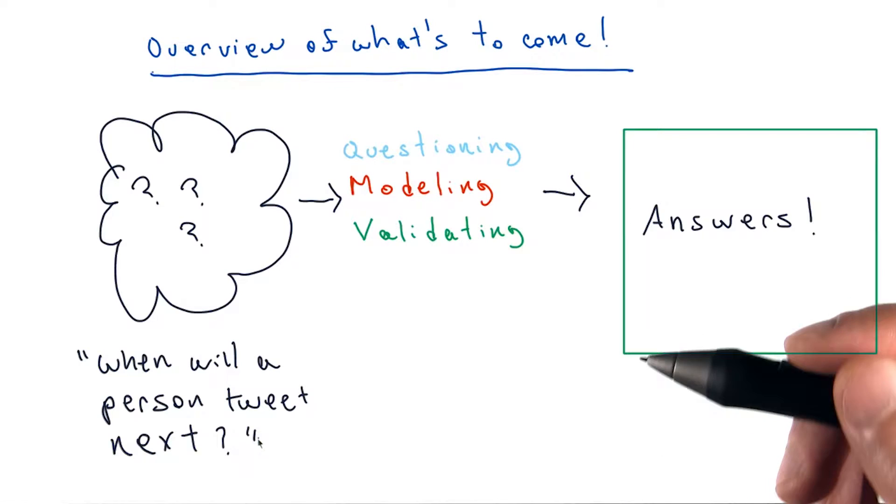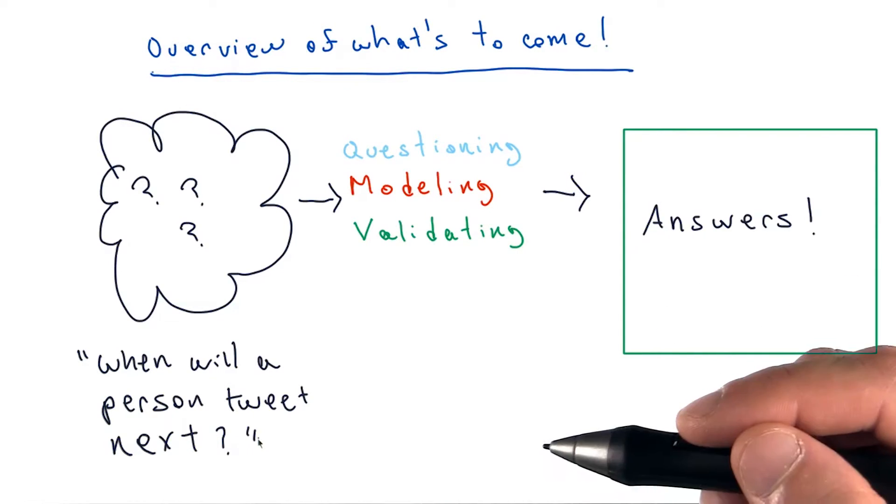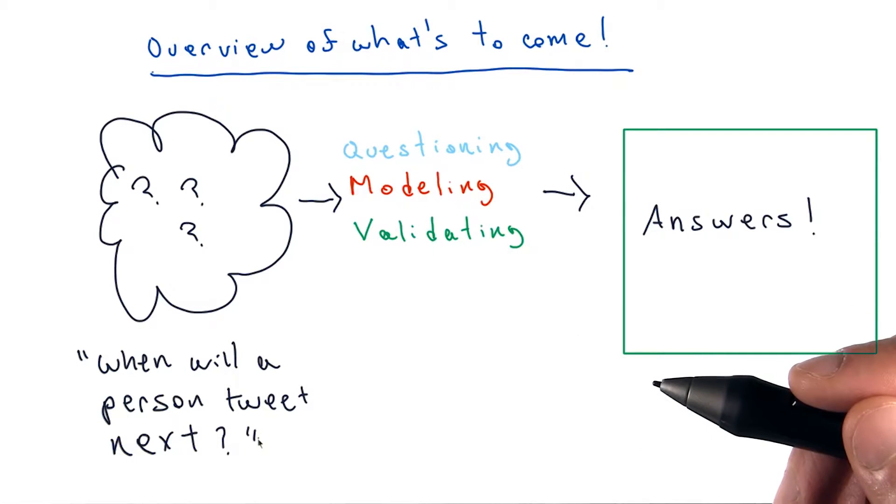A good way to think about this process is like a camera looking at something initially out of focus. Over time, we slowly bring it into focus.